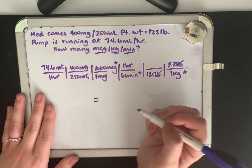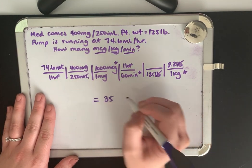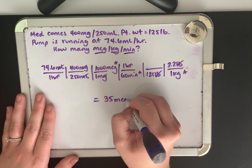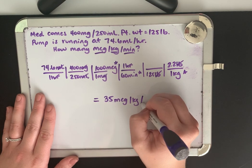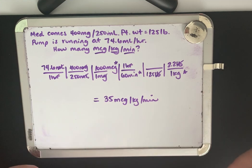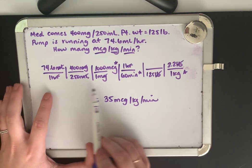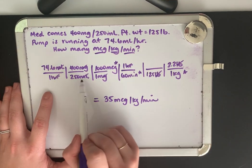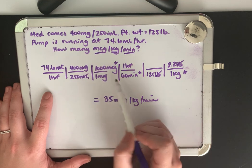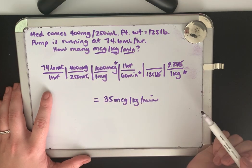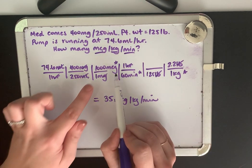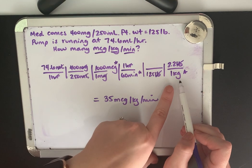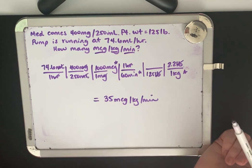And when we solve this problem out, we wind up with approximately 35 micrograms per kilo per minute. You can see how this can get really confusing. So you want to stop whenever you hit one of your units you're looking for and make sure you've canceled everything out. And in this case again, we have our mcg per every kilo per every minute.